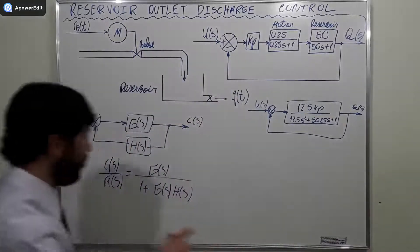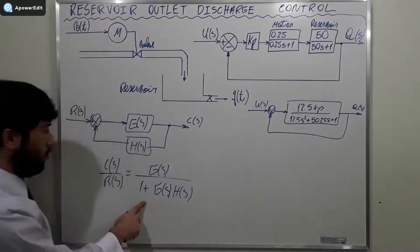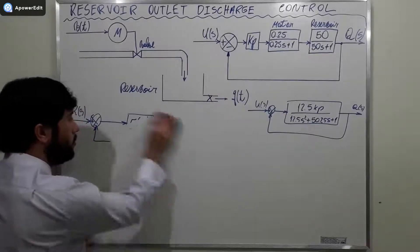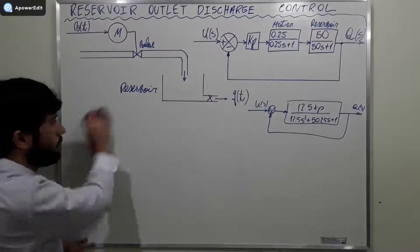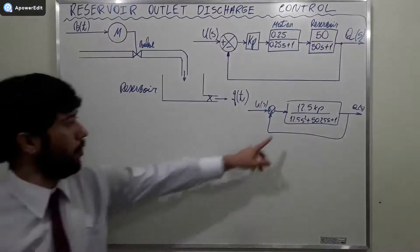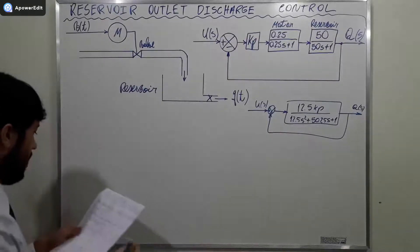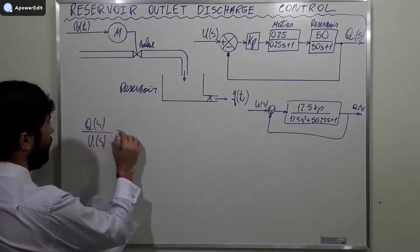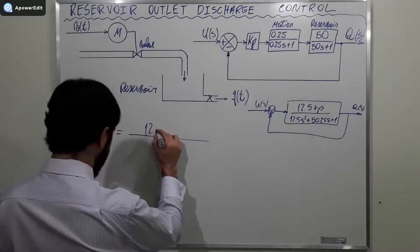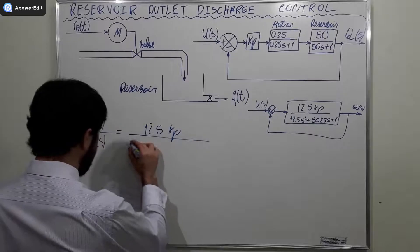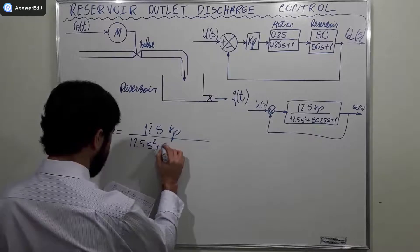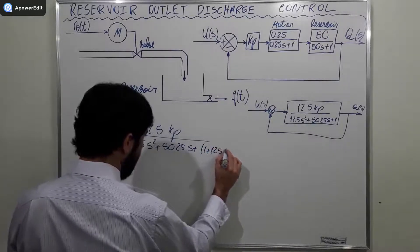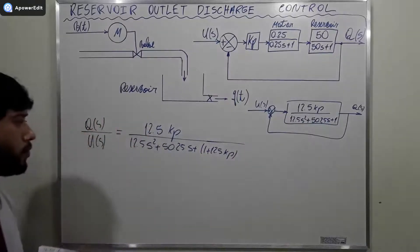Now, using that formula, we find that Q(S) divided by U(S) is equal to 12.5Kp divided by (12.5S² + 50.25S + 1 + 12.5Kp). We are almost there.